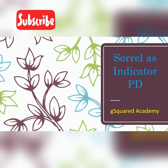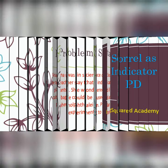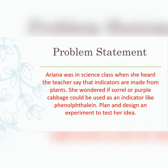Today we are looking at soil as an indicator. The problem statement: Ariana was in science class when she heard the teacher say that indicators are made from plants. She wondered if sorrel or purple cabbage could be used as an indicator like phenolphthalein. Plan and design an experiment to test her idea. That is our problem statement.